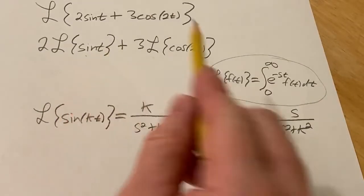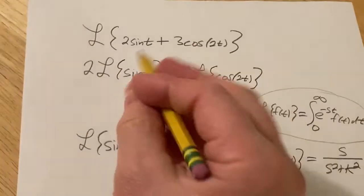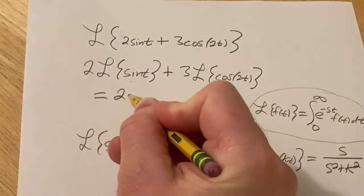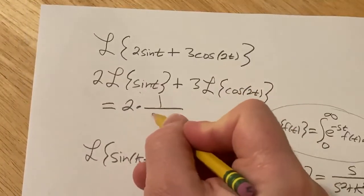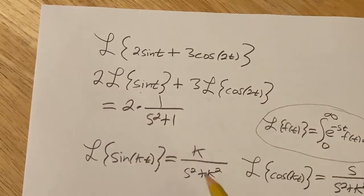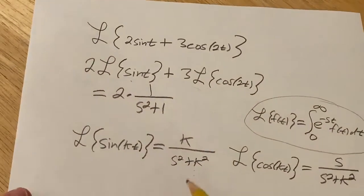Okay, so in this case here, sine t, k is 1, so this is going to be 2 times 1 over s squared plus 1, because 1 squared is 1.